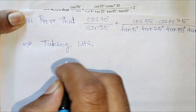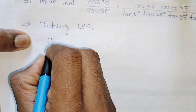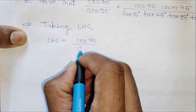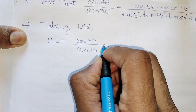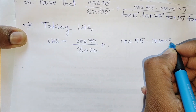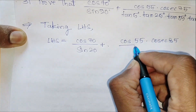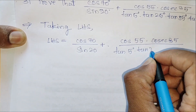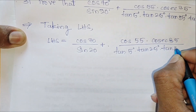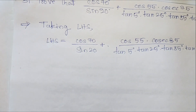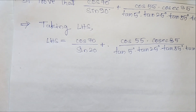Let us write LHS. LHS equals cos 70 divided by sin 20, plus cos 55 into cosec 35, divided by tan 5 degree into tan 25 degree, into tan 85 degree into tan 65 degree. These are continuous tan functions and cos functions in series.